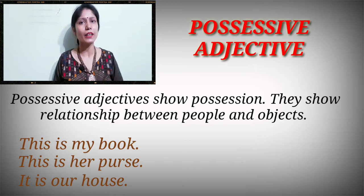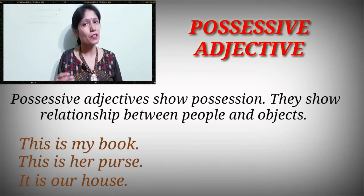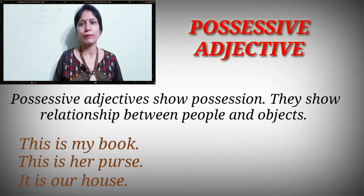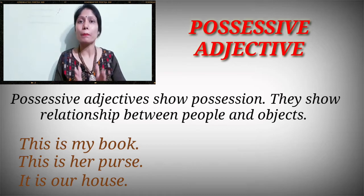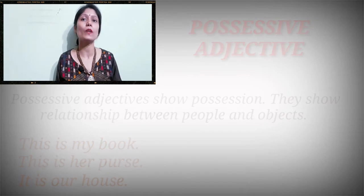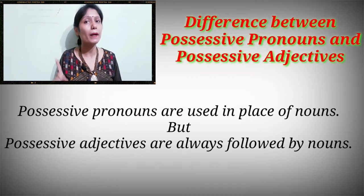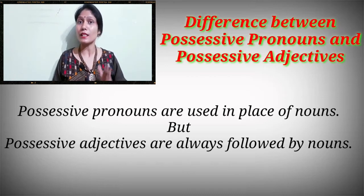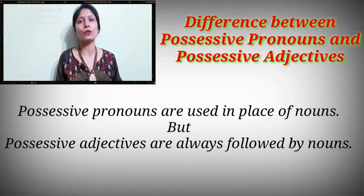You must have noticed that in all these sentences, the possessive adjectives are followed by nouns. Possessive adjectives ke baad hamesha nouns aate hain — 'my book,' 'her pen,' 'your brother,' 'his house.' So possessive adjectives are always followed by nouns. This is the main difference between possessive pronouns and possessive adjectives: possessive pronouns are used in place of nouns — no noun comes after them — while possessive adjectives are always followed by a noun.